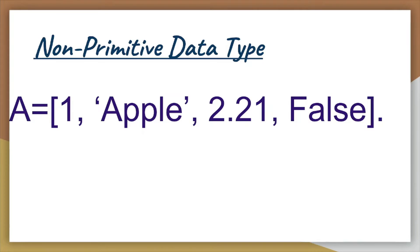We know that primitive data types are predefined data types inside the given programming languages. Non-primitive data types or object-oriented data types are user-defined data types that store different data types in single entities. As an example, consider list A. Here A contains integer 1, string apple, float 2.21 and boolean false inside it. Hence A is a non-primitive data type.